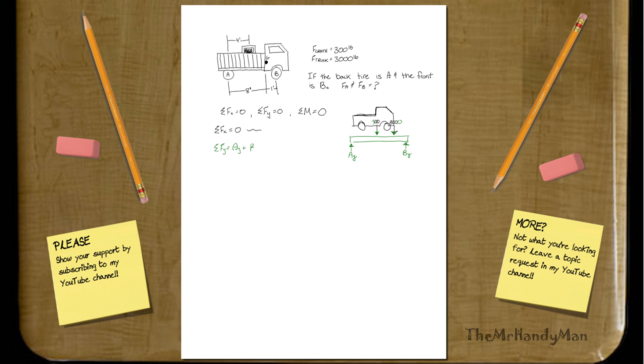What you'll find is AY plus BY minus 300 minus 3,000. Okay yeah, but you knew that you were going to have two unknowns, so most of you would have just hopped right over to the moment.